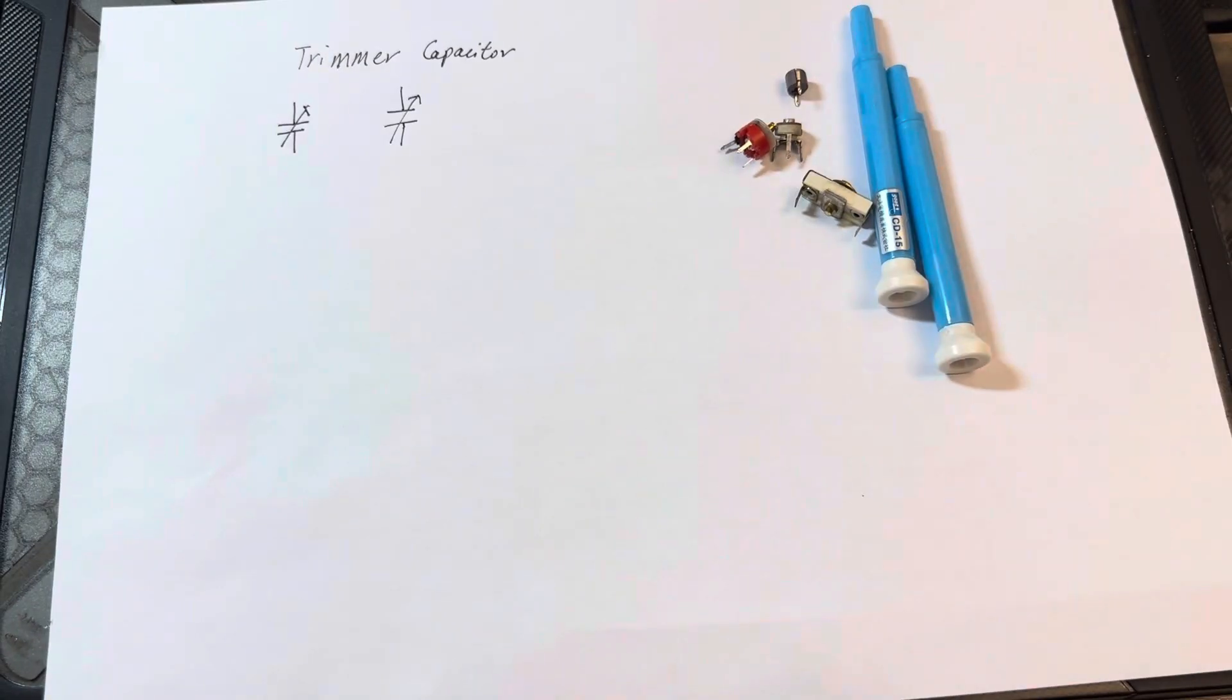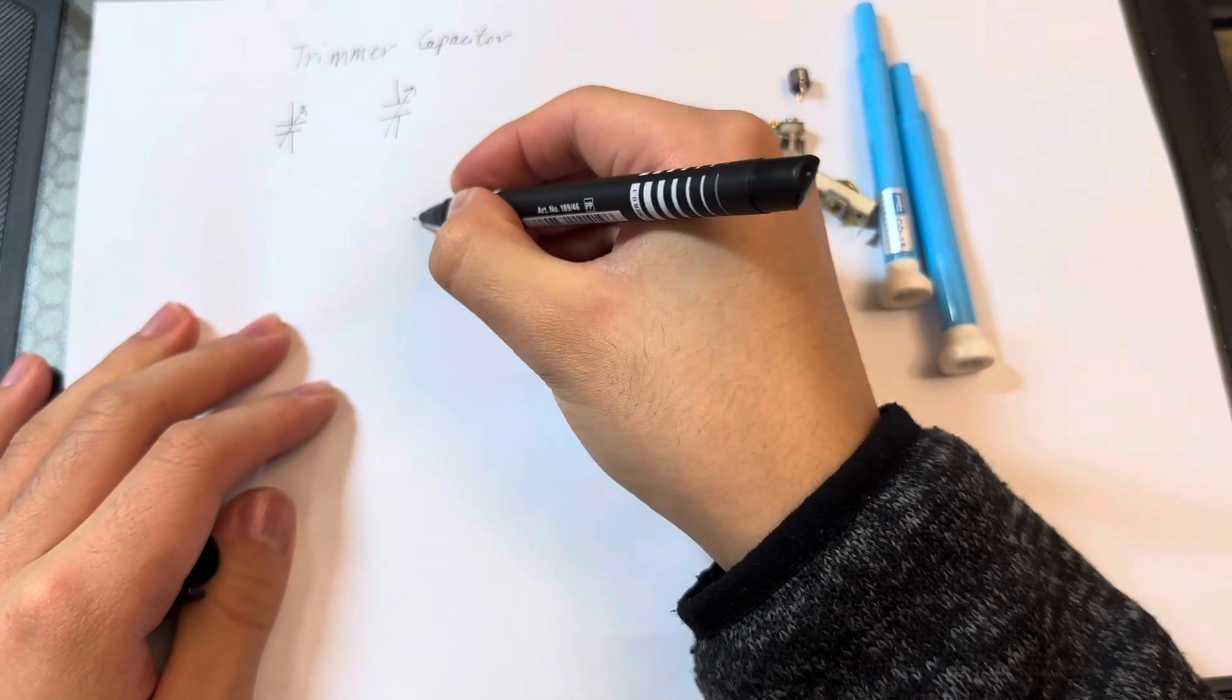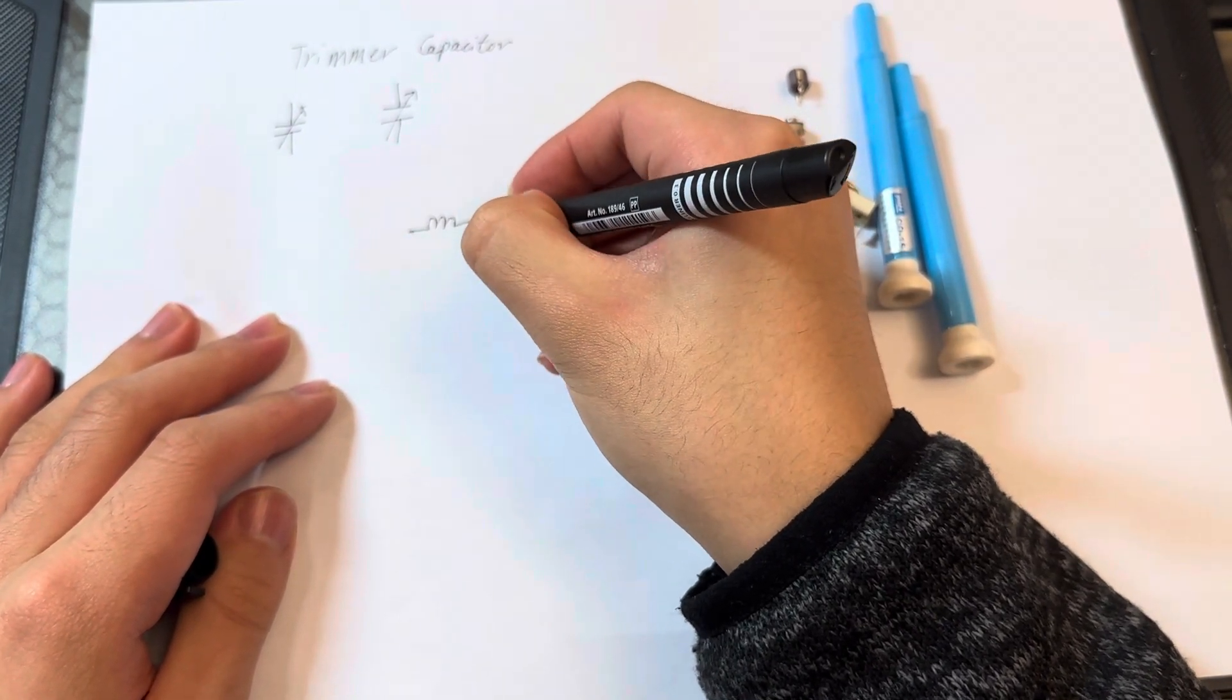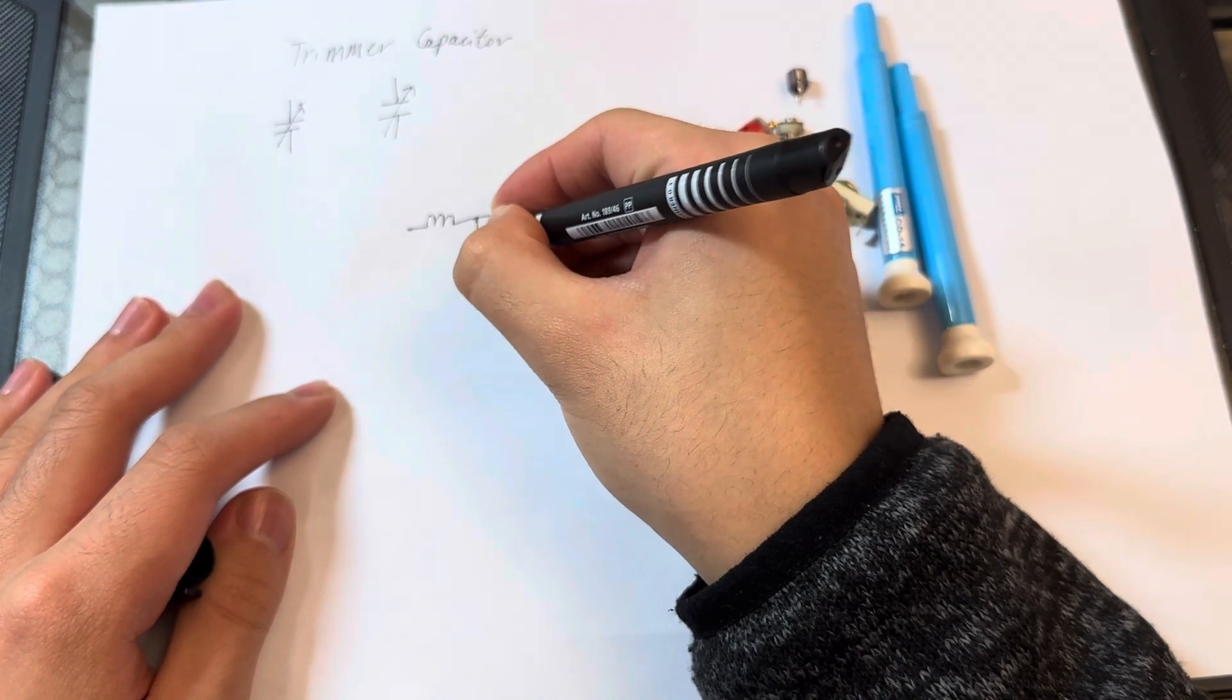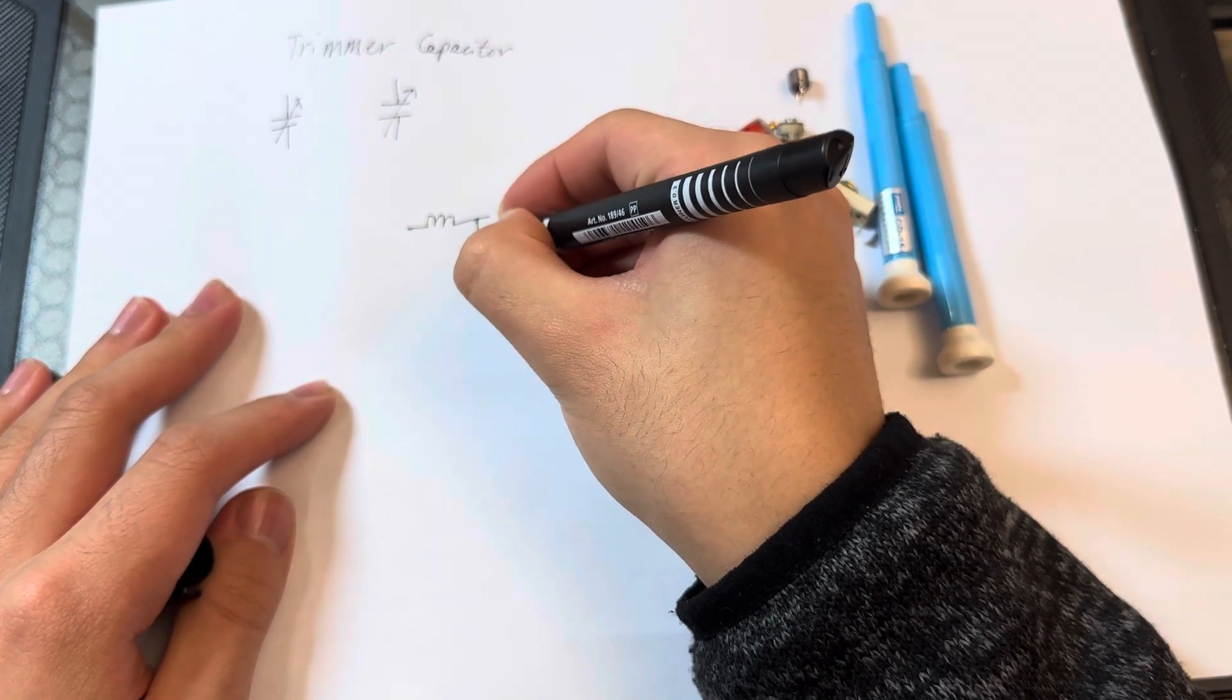Trimmer capacitors are generally used in tuning circuits, for example in L-match or T-match networks, but generally with standard tuning circuits.